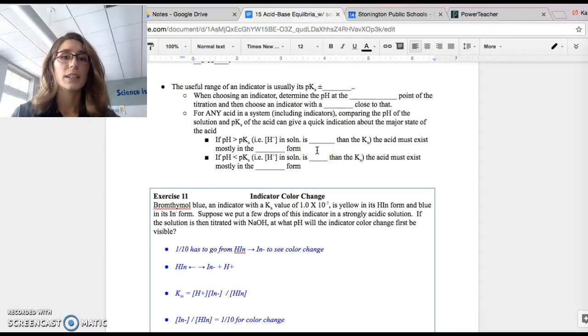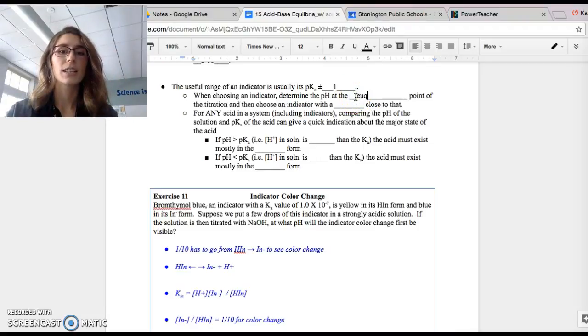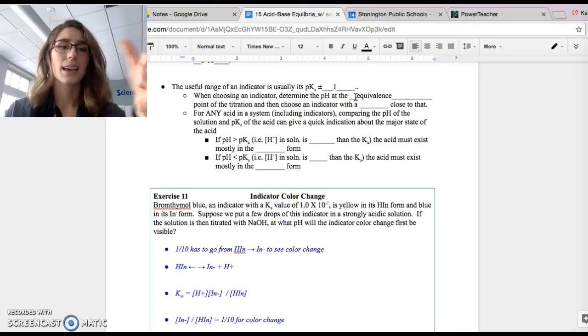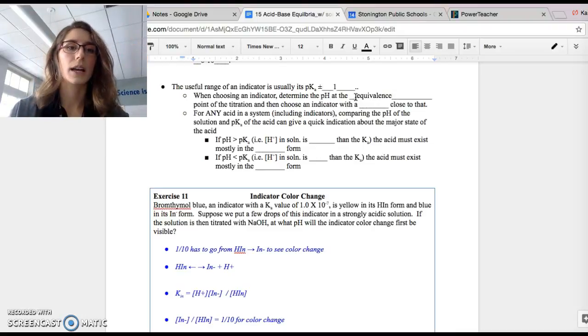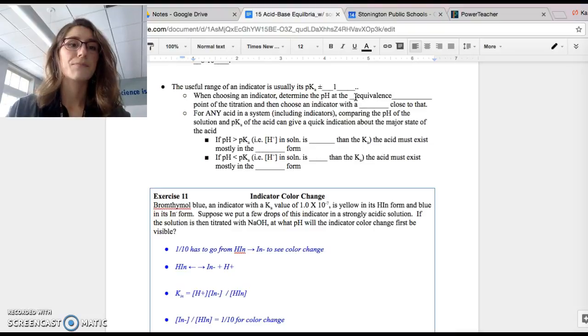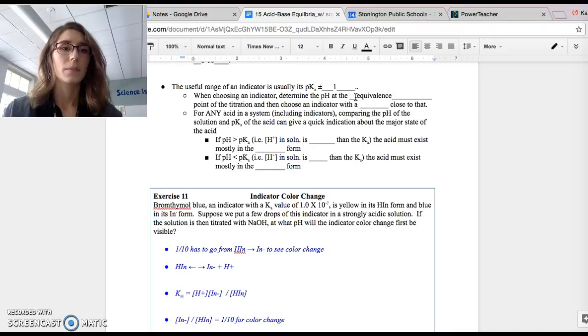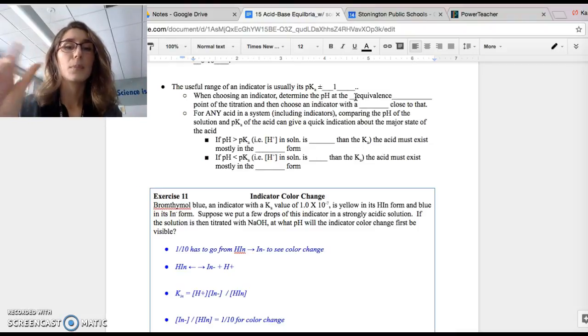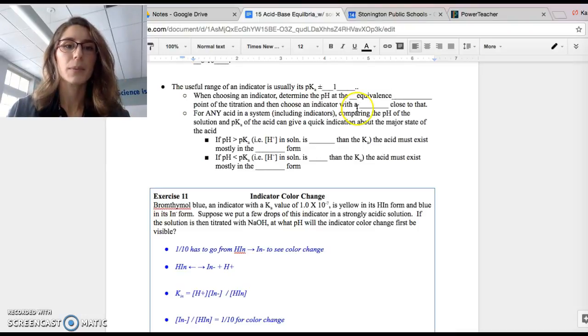The useful range of an indicator is usually its pKa plus or minus 1. So that means whatever the pH at the equivalence point of the titration is, we want the pKa of the indicator to be within plus or minus 1 of the pH of the equivalence point. So you may be given some information, you may be given an equivalence point for a titration, and you may be asked from this list of indicators and their pKa's, which one is the most effective. So pH at the equivalence point and pKa should be very close together. Ideally, the pKa is within plus or minus 1 of the pH at the equivalence point.